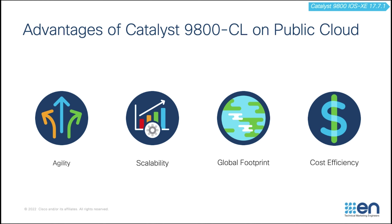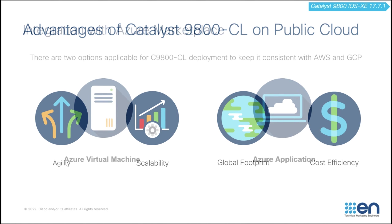Last but not least, cost efficiency. First of all, it takes zero dollars to launch a Catalyst 1900 CL on Microsoft Azure. It reduces data center footprint and infrastructure costs, shifting from a capex model to an opex model where you will get billed as you utilize the resources.